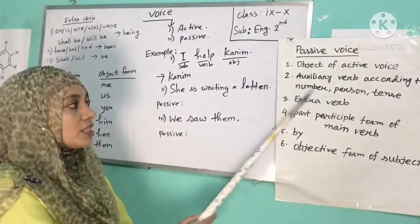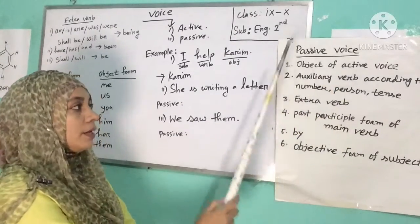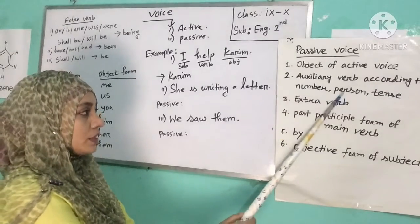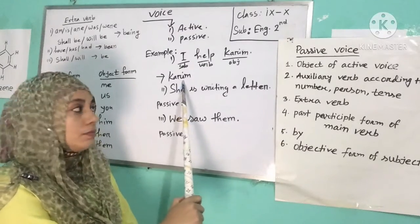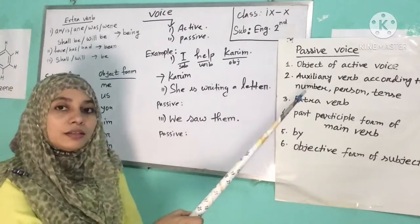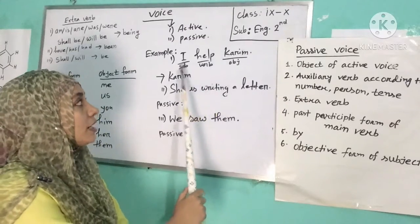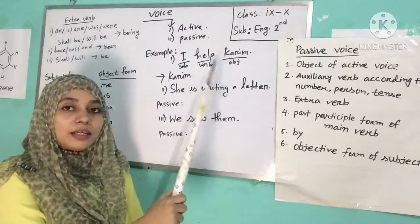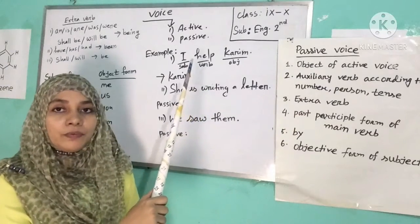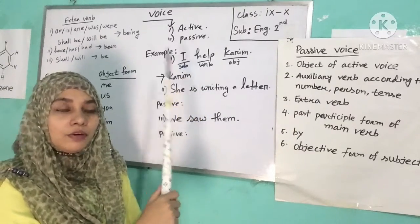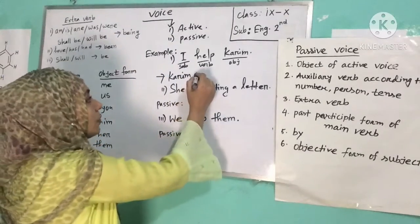Step two: auxiliary verb according to number, person, and tense. 'Corin' is singular, so we use a singular verb. The sentence 'I help Corin' is in present tense, so we use the verb in present form. Therefore we have: 'Corin is'.